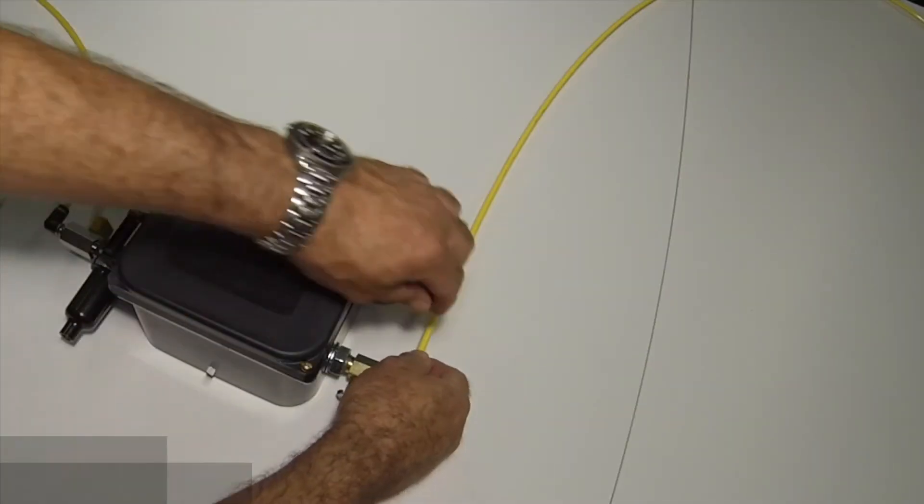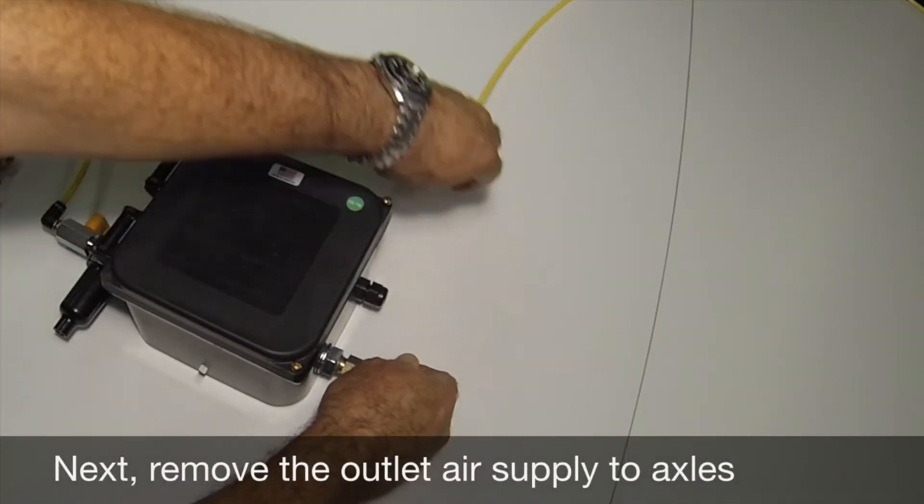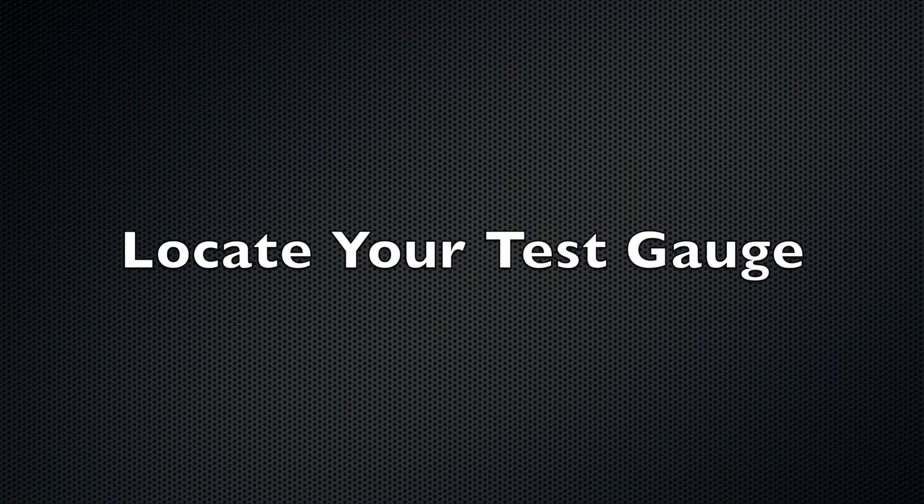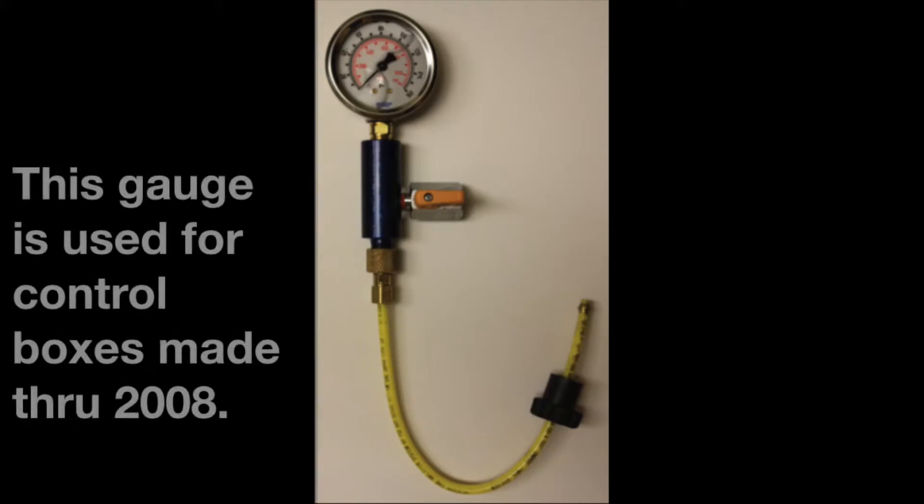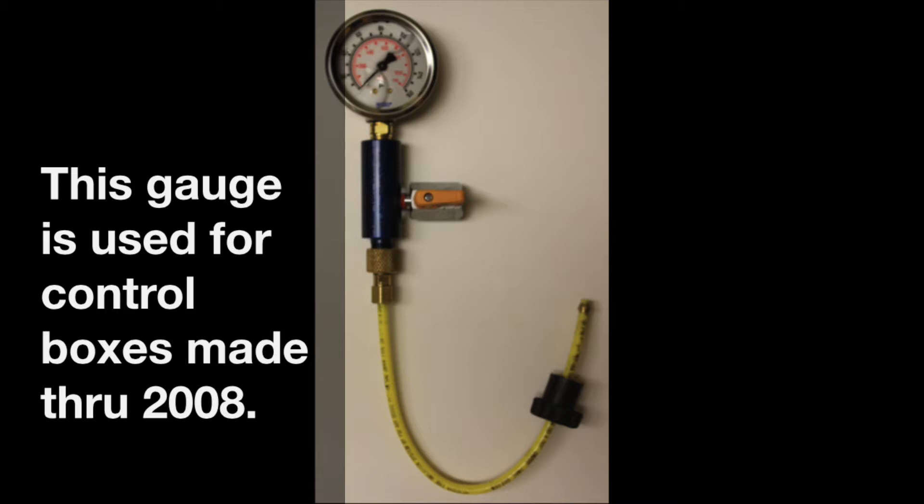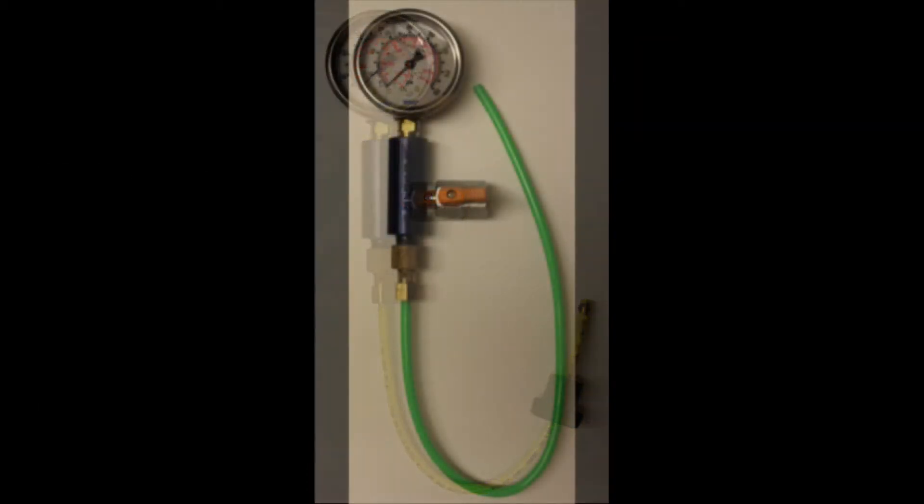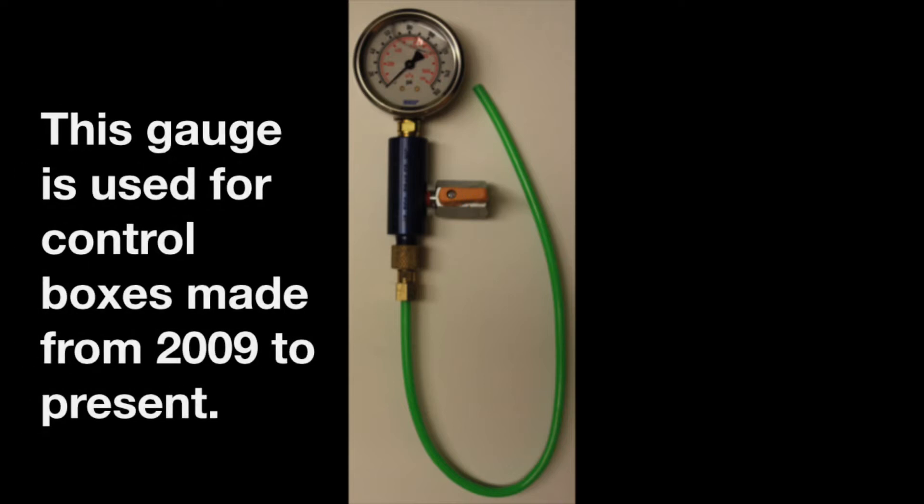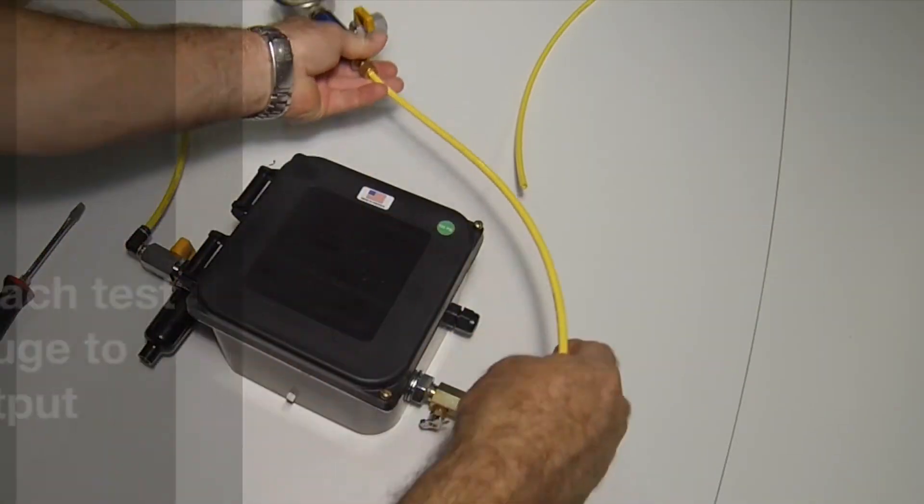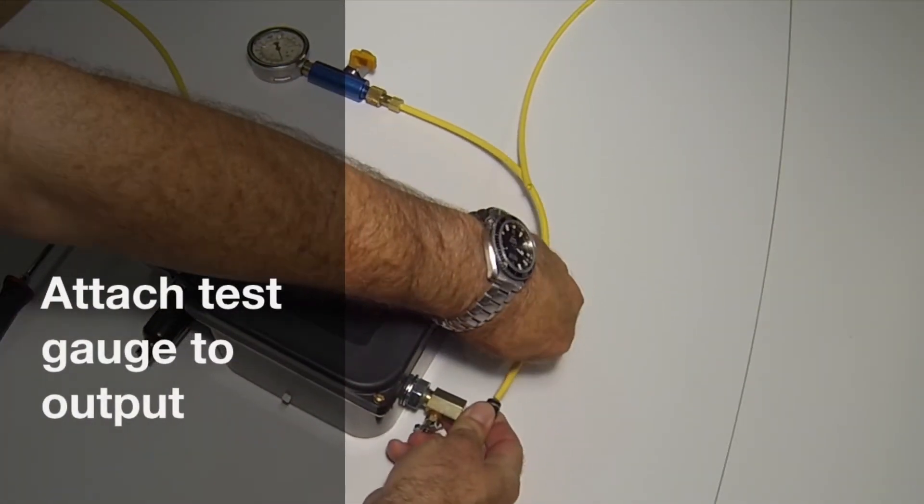Now remove the supply line from the quick connect on the outlet port of the control box and attach your test gauge to the outlet port of the control box.